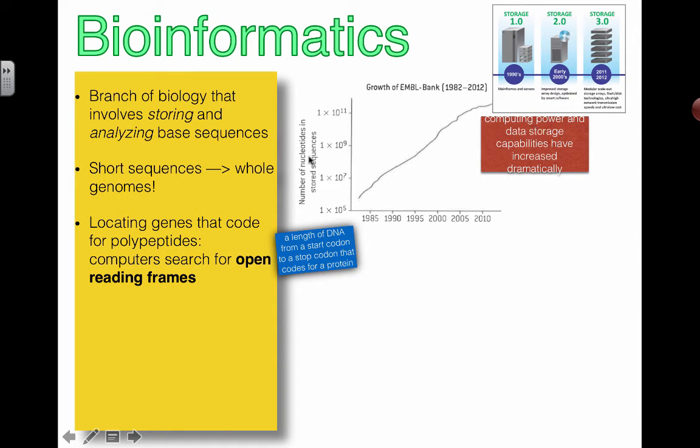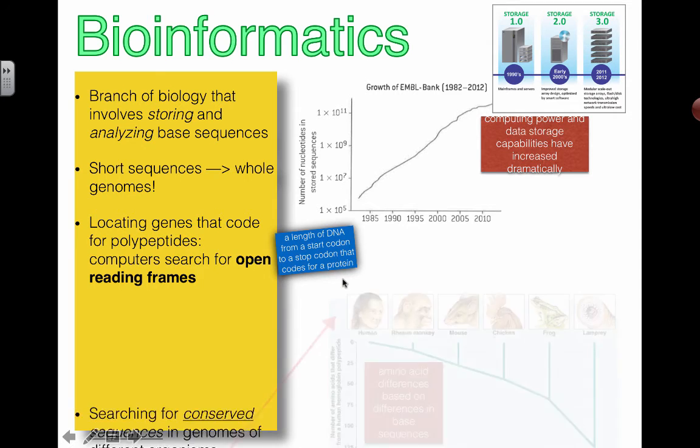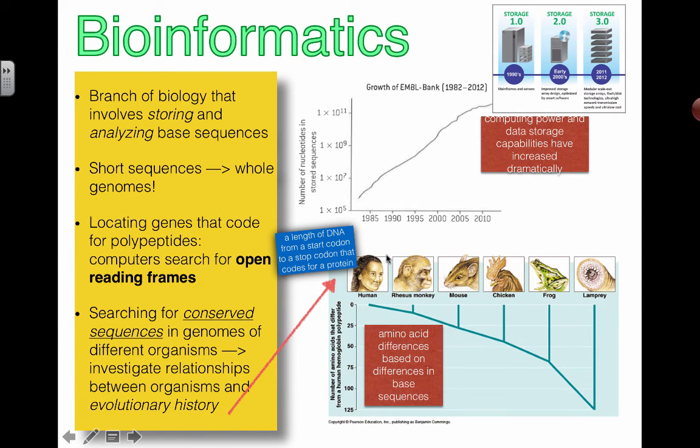It allows us to use these kinds of databases to search for things called open reading frames, which are basically lengths of DNA that code for a protein from the start codon all the way to the stop codon, and it allows us to search and understand evolutionary differences.